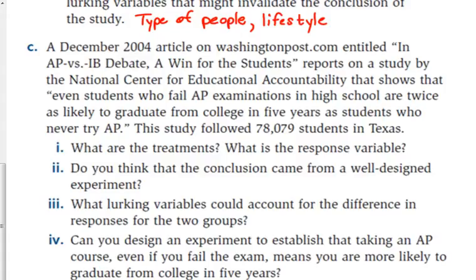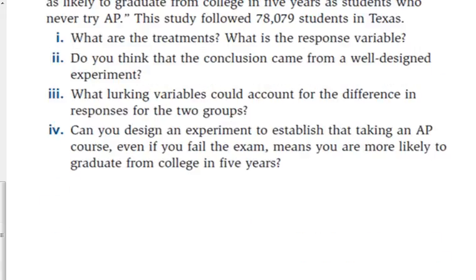This is a good example of that. There was an article on WashingtonPost.com that had to do with AP versus IB. It says that even students who fail AP exams in high school are twice as likely to graduate from college in five years as students who never try AP. It followed 78,079 students in Texas. So what is the treatment here? Taking AP. What's the response variable? Graduating in less than five years.